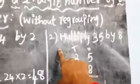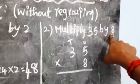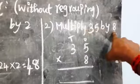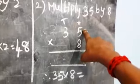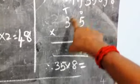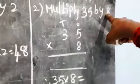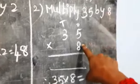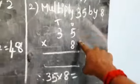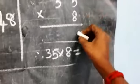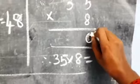Now look at this next sum. Multiply thirty-five by eight. Thirty-five by eight. First write the two-digit number: three-five, thirty-five. Here multiply by eight. Eight fives are forty, so we write zero here.